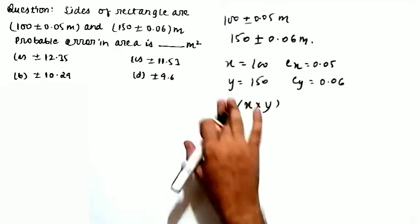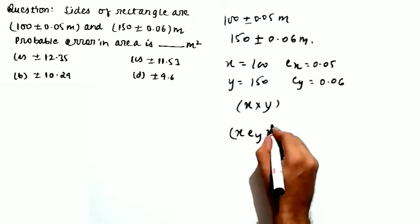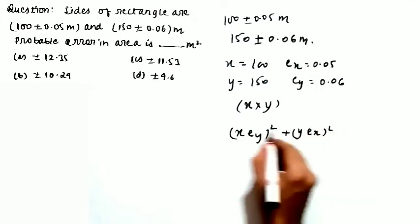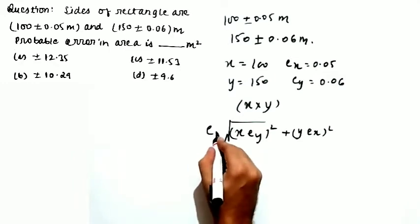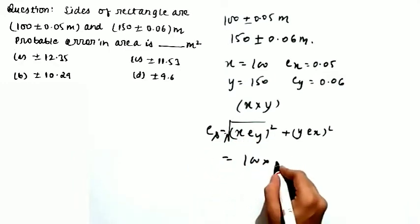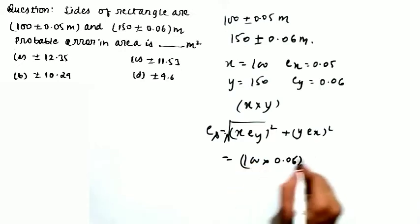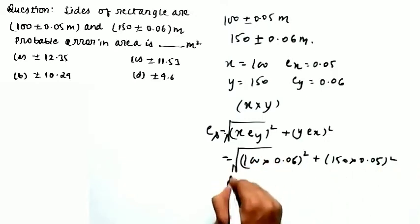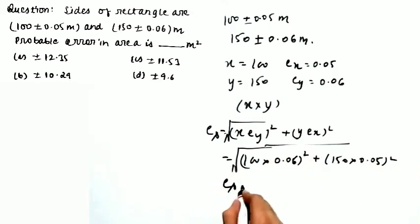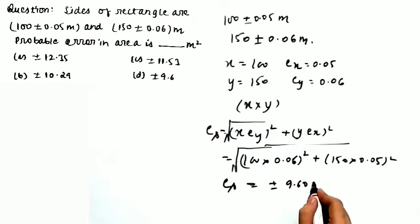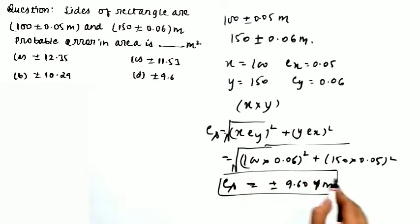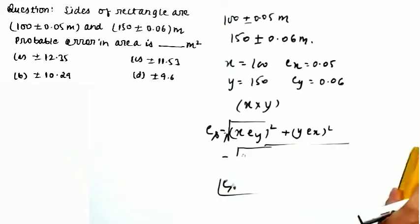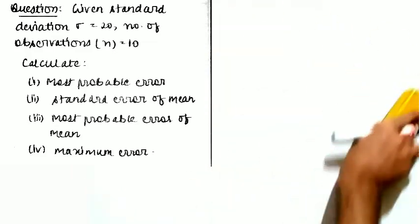The formula for error in a product is: e_xy = √((x · ey)² + (y · ex)²). So it becomes √((100 × 0.06)² + (150 × 0.05)²), which gives ±9.604 square meters. This is the probable error in the area of the rectangle. Now moving to the next question, also related to errors.